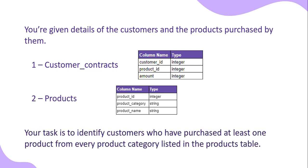You have to identify the customers who have purchased at least one product from every product category listed in the products table. So you have to write a query to find the customers who have purchased at least one product from each product category mentioned in the products table. Let's look at the sample input and output.